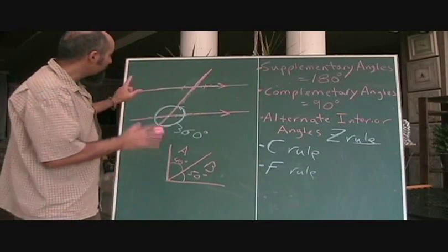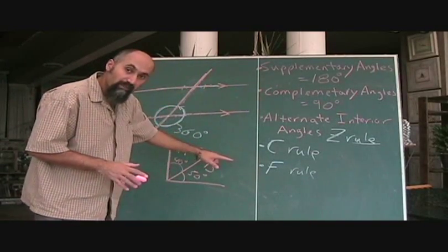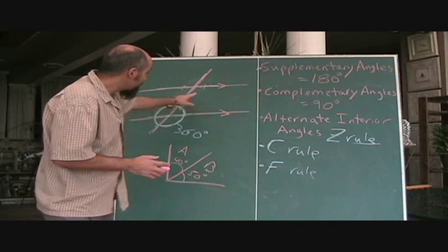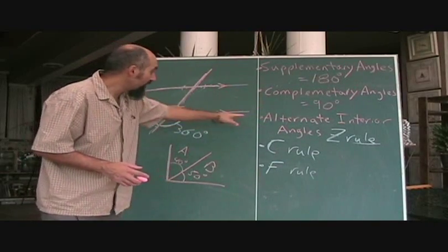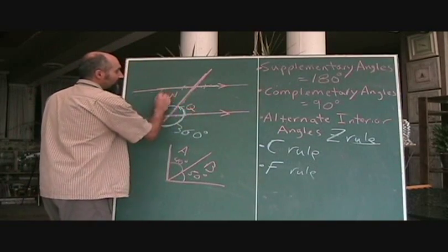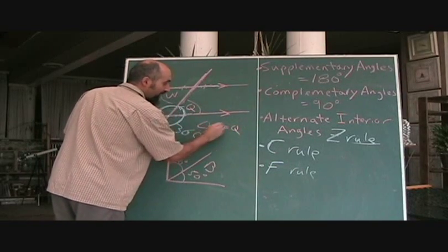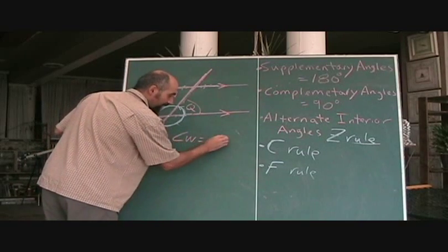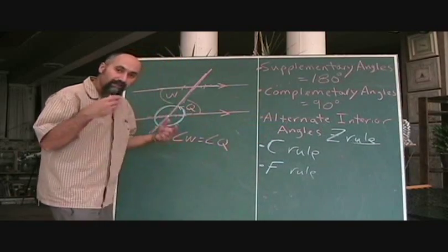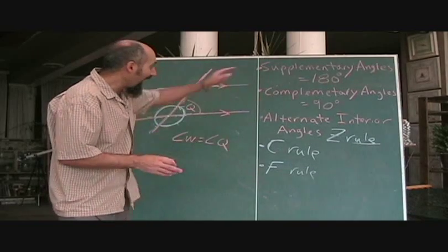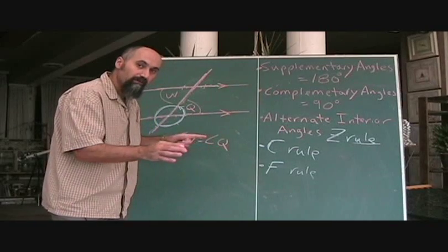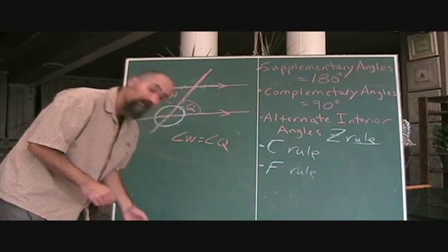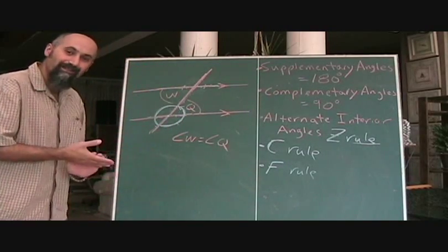These are the terminologies you'll encounter when dealing with lines and angles. You definitely have to memorize these and refer to them when doing proofs. For example, if they give you angles W and Q, you would write: angle W is equal to angle Q, reason — alternate interior angles. That's a valid response and you get a point for it. Each term refers to a specific relationship, and it's a tool for making precise statements. Learn these terminologies, apply them correctly, and we will do more proofs with this material later on.